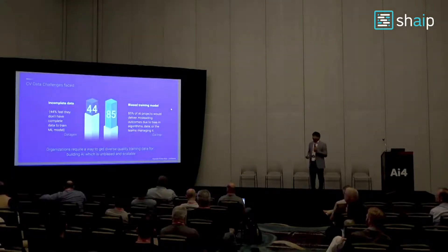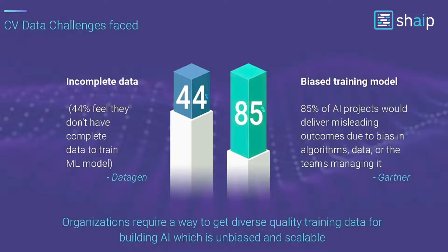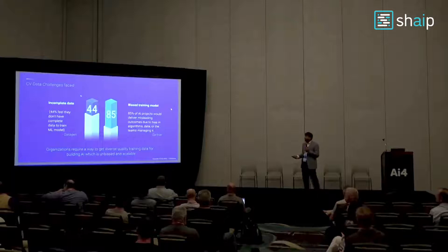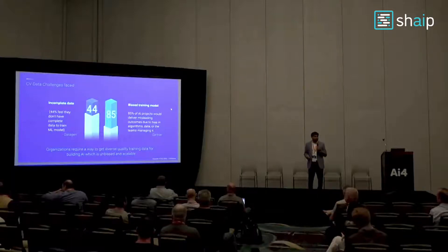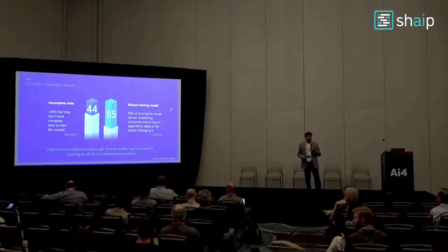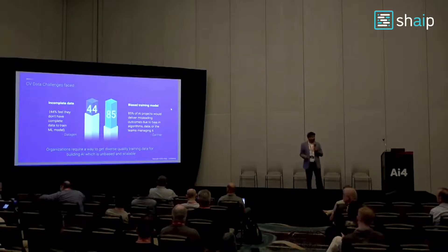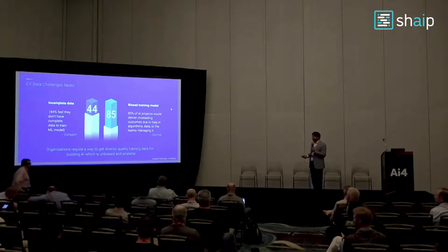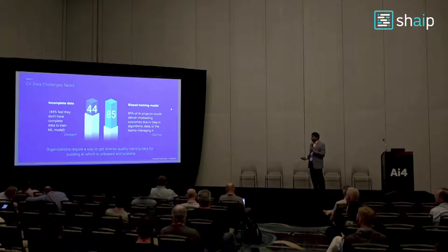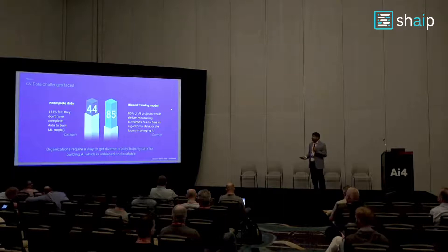On top of that, 44% of data scientists feel they don't have complete data — it's still incomplete, not diverse, not well-curated. About 85% of AI projects would be delivering misleading results because of biased training models. I'll show some real-case examples in the following slides. Organizations require a way to get diverse, quality data for building AI that is scalable and unbiased.